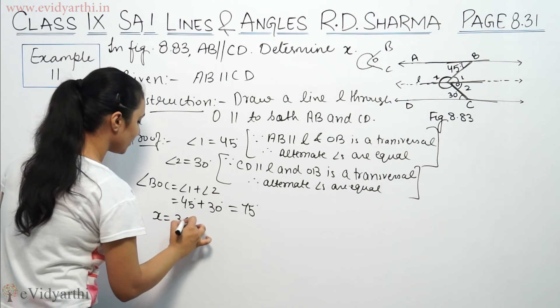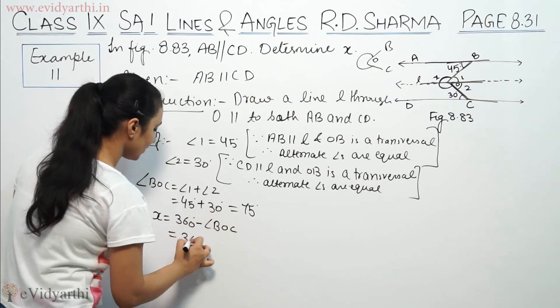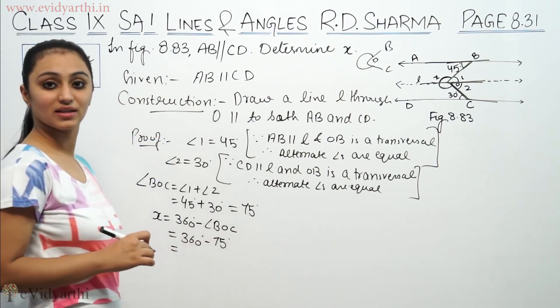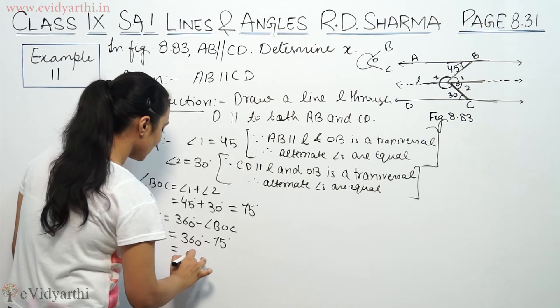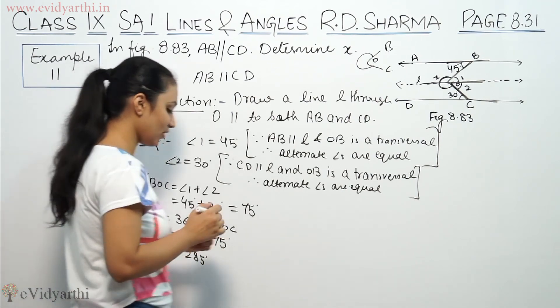So x will equal 360 degrees minus angle BOC. So 360 degrees minus 75. This will be 285. So this is the value for x.